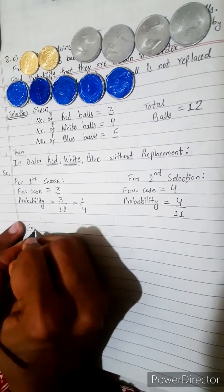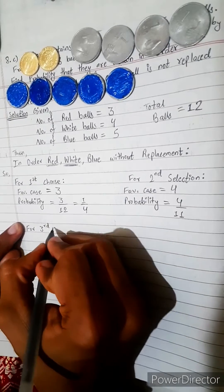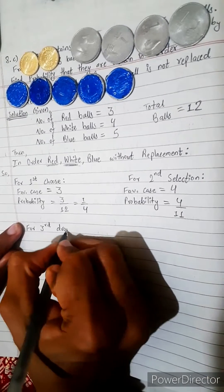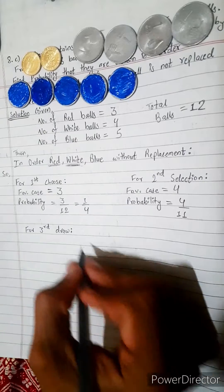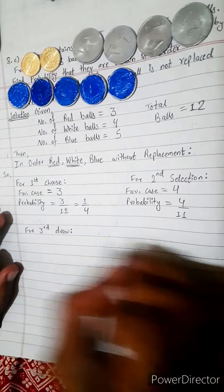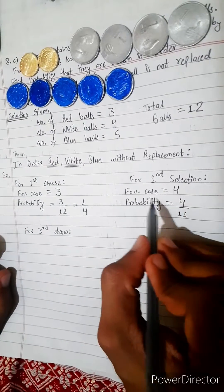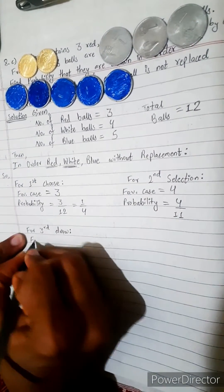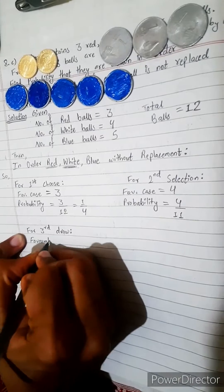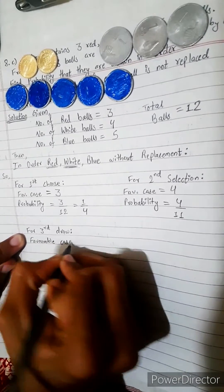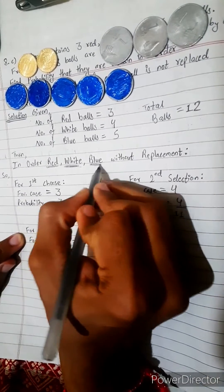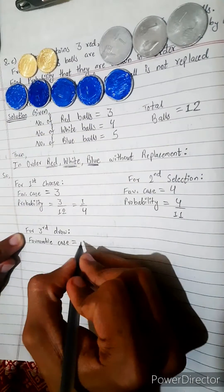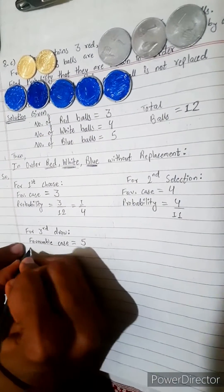For third draw, for third selection. One white is also selected. Favorable case: in third time what we need? Third time we need blue. 1, 2, 3, 4, 5. There are 5 favorable cases.